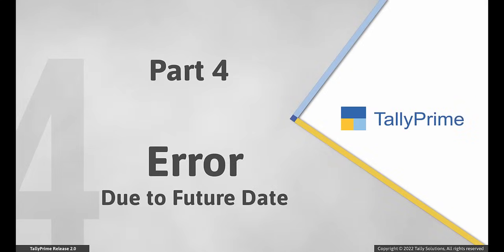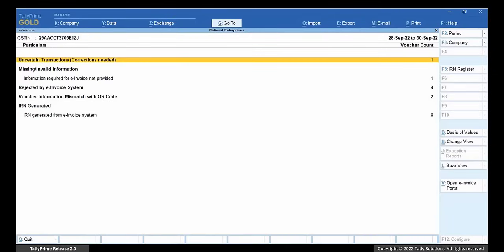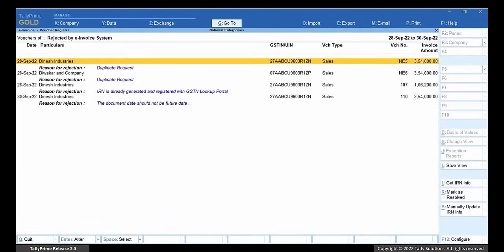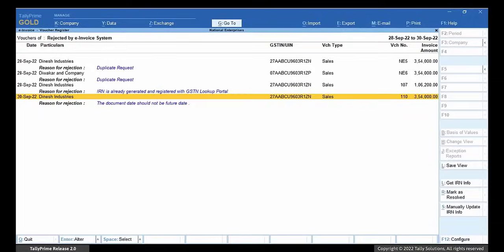Now let's see the error that occurs in an invoice with a future date. While recording an invoice, if you press F2 and enter a future date — even though Tally Prime allows you to record an invoice with a future date — the e-invoice system generates e-invoice only for transactions with the current date or backdated ones. Open the rejected by e-invoice system in the e-invoice report. The reason for rejection is: the document date should not be a future date. If you want to generate e-invoice for the same date, you can do it on that date itself.